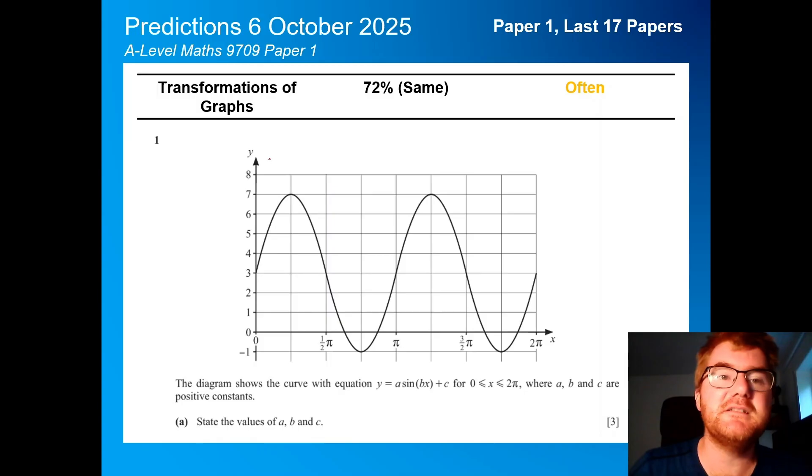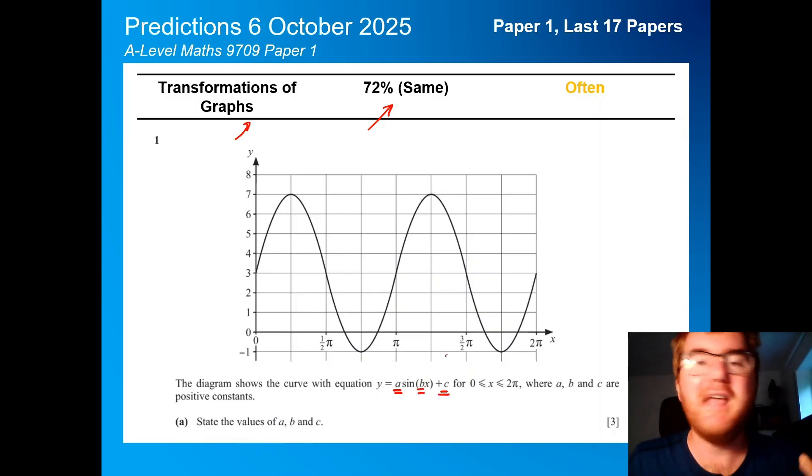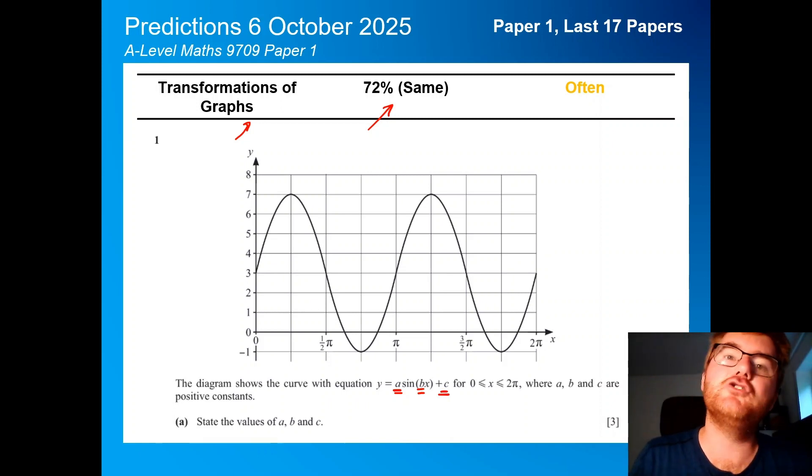Let's start with transformations of graphs, now roughly the same at 72%, so often but doesn't appear every time. Here we've got a typical question working with a sine function, and here we need to work out from the graph the amplitude, the period, and the y-intercept. Make sure you can work with any kind of function and it being transformed.